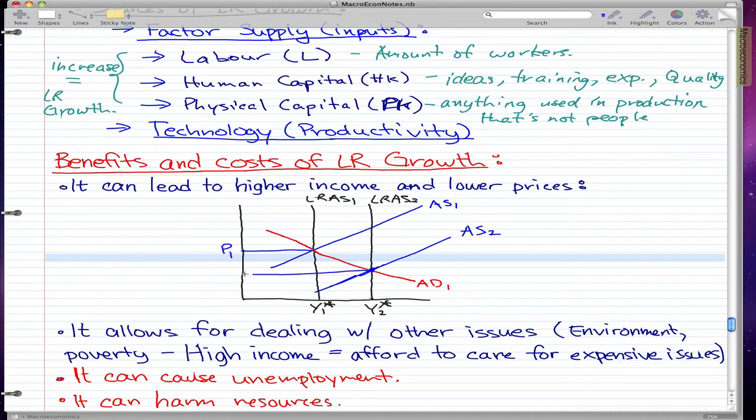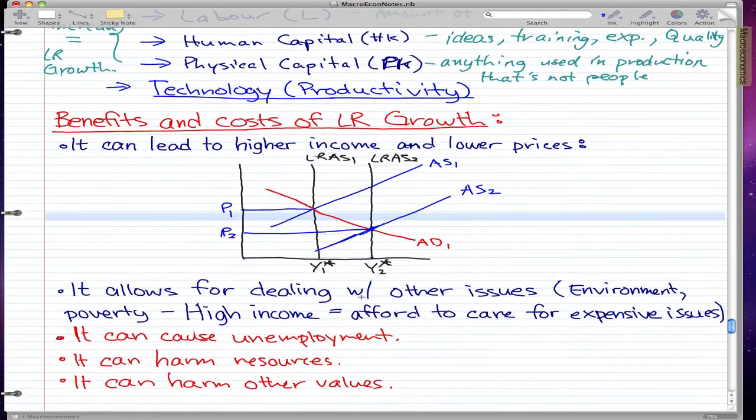the original price, and this is the new price, which is lower. We have higher income because